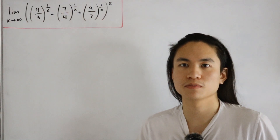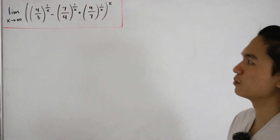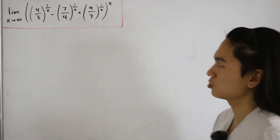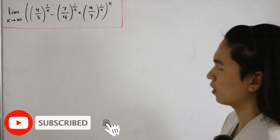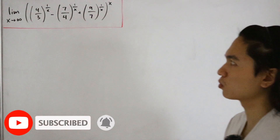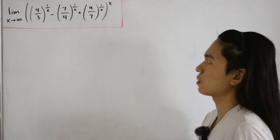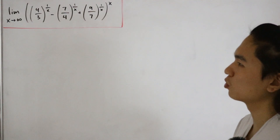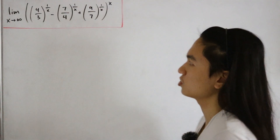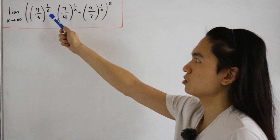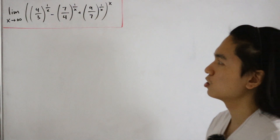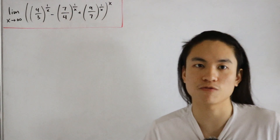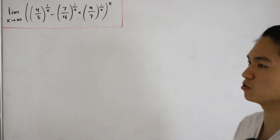We have an interesting limit: the limit as x approaches infinity of the quantity 4 over 3 to the power 1/x, minus 7 over 4 to the power 1/x, plus 9 divided by 7 to the power 1/x — all raised to the power x. If you take this limit directly, the exponent 1/x approaches 0 as x→∞, so each base approaches 1, giving us a 1 to the power infinity indeterminate form.